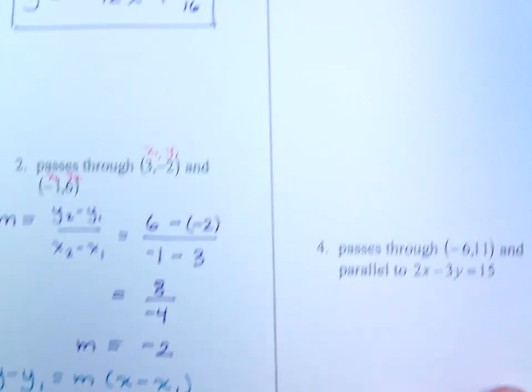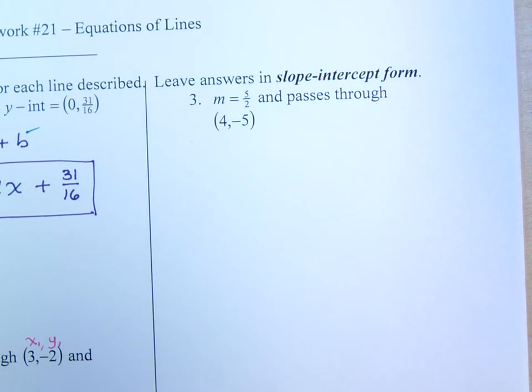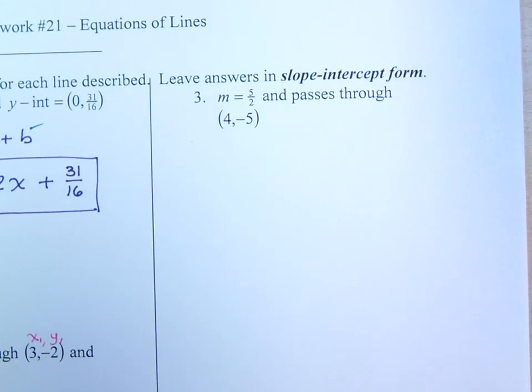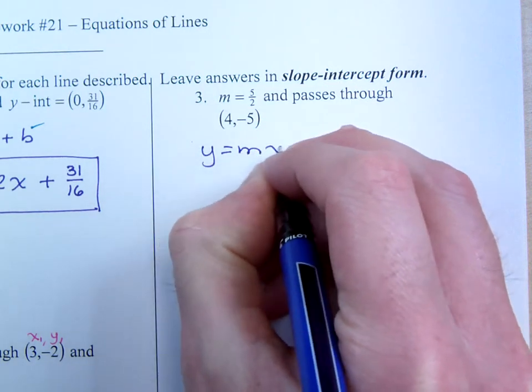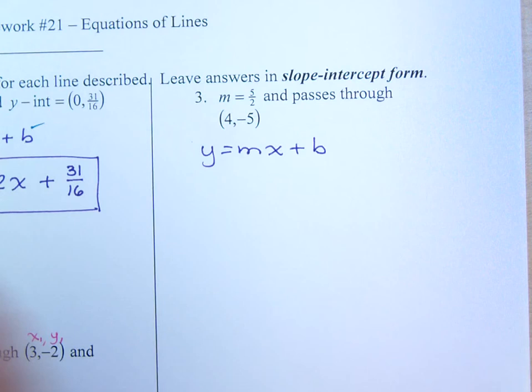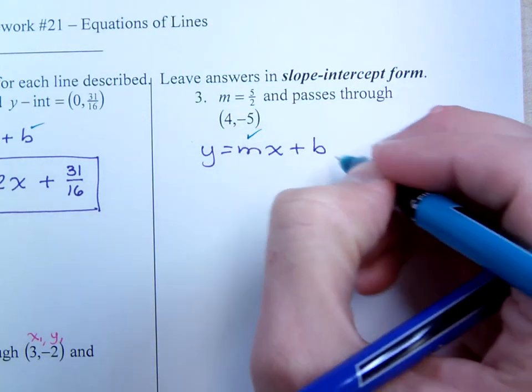Well, let's take a look at number 3. Number 3 gives me the slope and gives me a point. Now, I could use a point-slope formula, but I can also use the slope-intercept form. In this case, I know my slope, but I don't know my b.